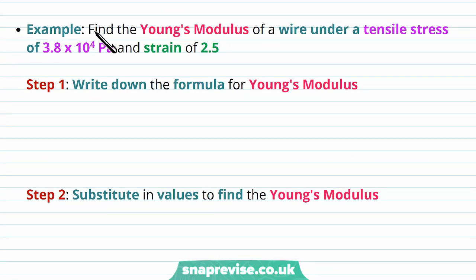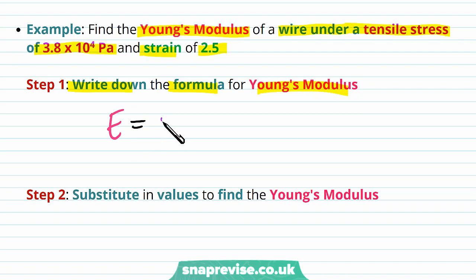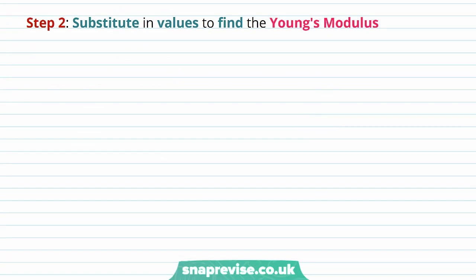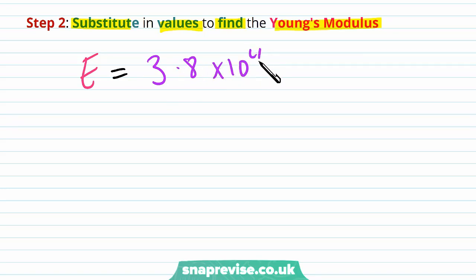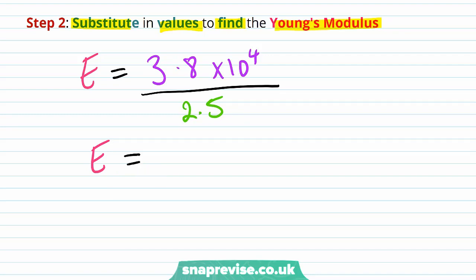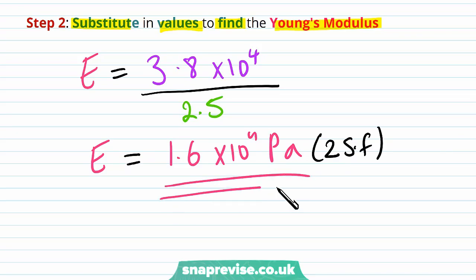Let's look at an example. Find the Young's modulus of a wire under a tensile stress of 3.8 × 10⁴ Pa and a strain of 2.5. First, write down the formula: Young's modulus E equals stress divided by strain. Then substitute in the values: E equals 3.8 × 10⁴ divided by 2.5, which gives a Young's modulus of 1.6 × 10⁴ pascals to two significant figures.